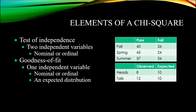With the goodness of fit, you have one independent variable, again at the nominal or ordinal level of measurement, and you compare this independent variable to an expected distribution. We often see the goodness of fit when working with some sort of known probability. For example, with a coin toss, you might have eight observations of heads and 12 of tails. Of course, the expected distribution would be equal — there's a 50-50 chance for any particular observation, so for both heads and tails categories, you would expect 10.